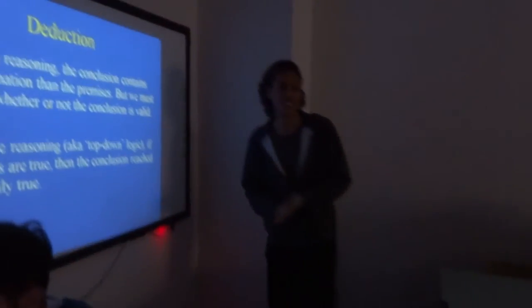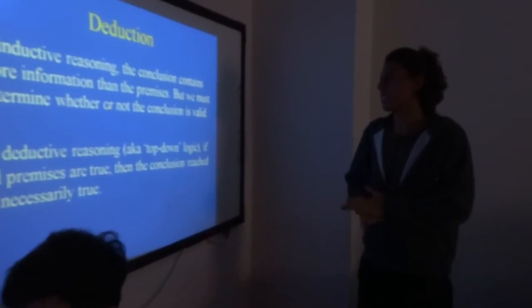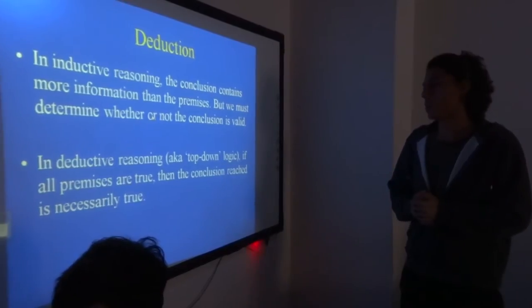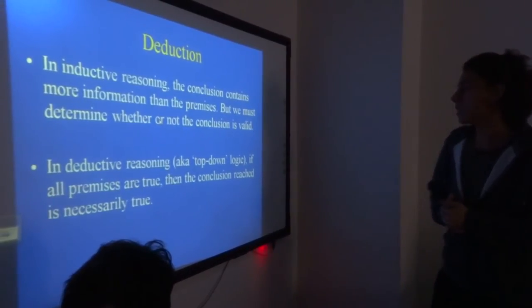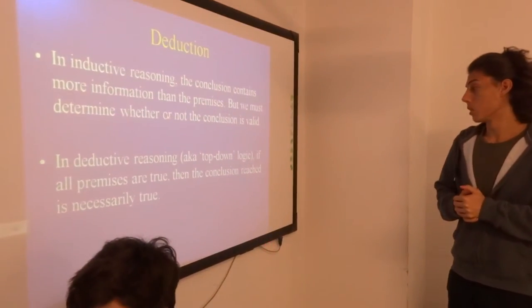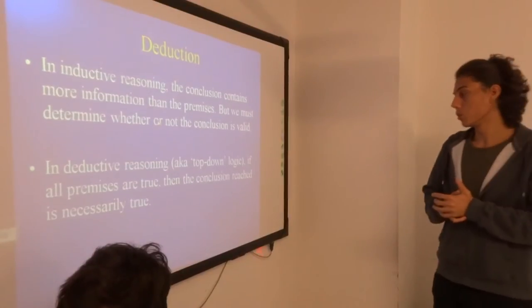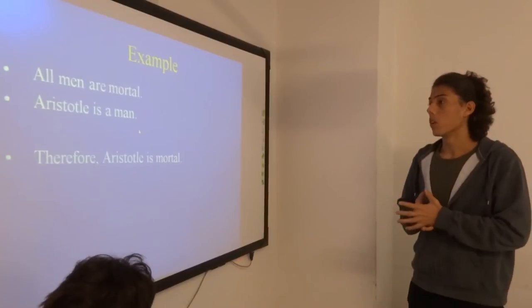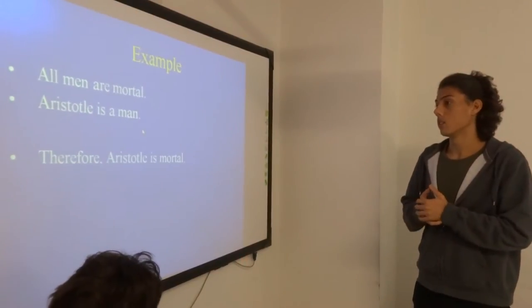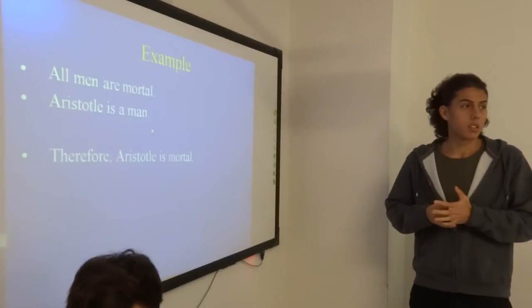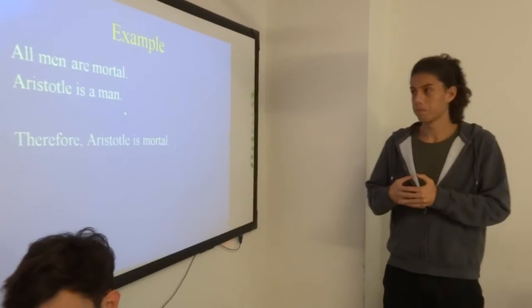We can change. Another volunteer. Deduction. In inductive reasoning, the conclusion contains more information than the premises, but we must determine whether or not the conclusion is valid. In deductive reasoning, top-down logic, if all premises are true then the conclusion reached is necessarily true. Example: all men are mortal, Aristotle is a man, therefore Aristotle is mortal.